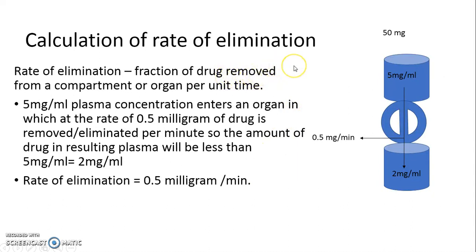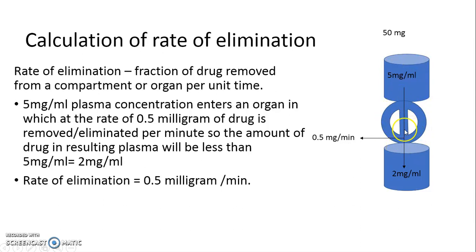Now we see how the rate of elimination is calculated. 50 mg of drug is given, creating a plasma concentration of 5 mg per ml. It gets distributed to organs and tissues, from which the elimination rate is 0.5 mg per minute, and the resulting plasma concentration is 2 mg per ml. This rate of elimination is straightforwardly 0.5 mg per minute.